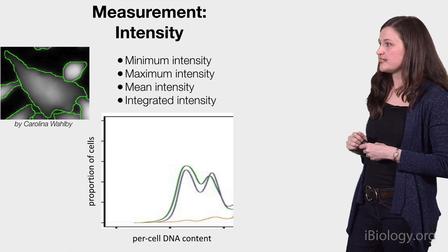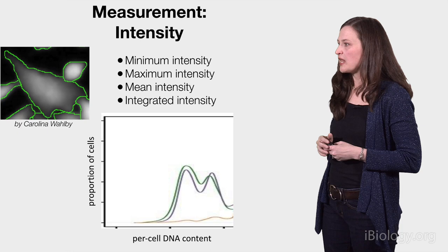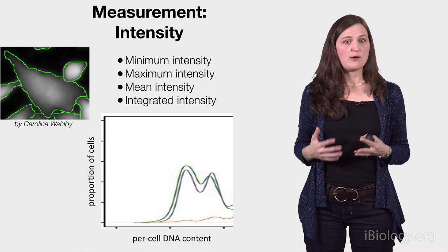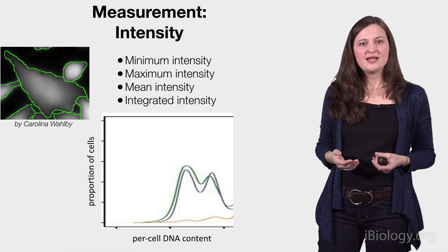One common reason to use integrated intensity is to measure the overall protein content or overall DNA content within each particular region. You might be familiar with a cell cycle histogram, where some cells have twice the amount of DNA content as others, because they've undergone DNA replication. You really need to think carefully about what you care about biologically when measuring intensity, to know whether mean or integrated reflects what you actually want to study.